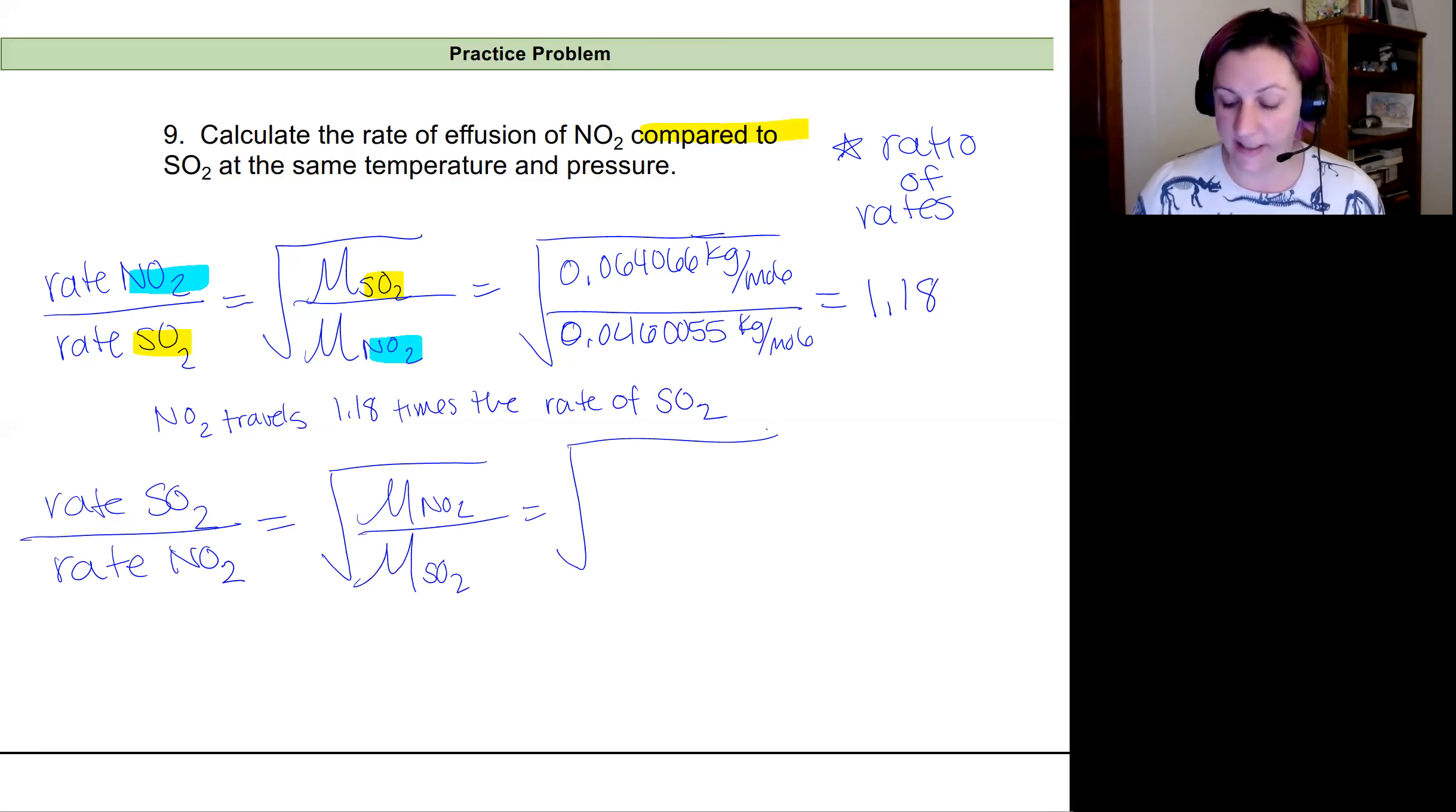And so when we would calculate this, we would have our smaller value on the top and our larger one on the bottom. So I expect to get something that's less than one. And I do, what I get is 0.85.